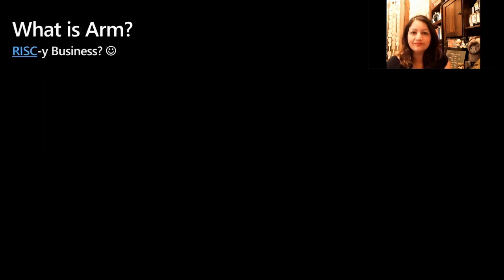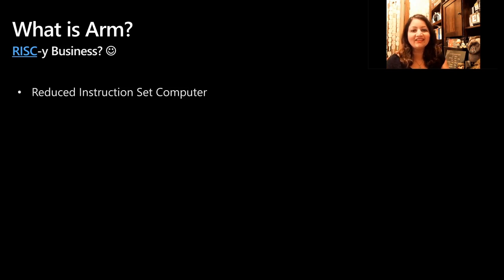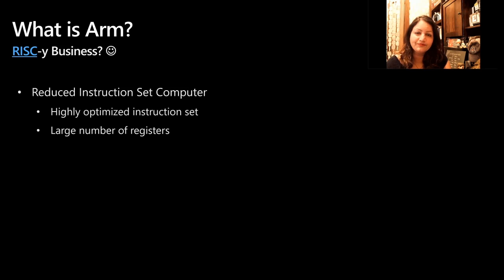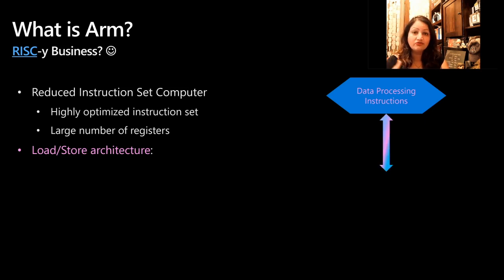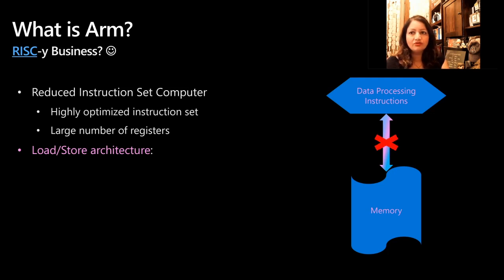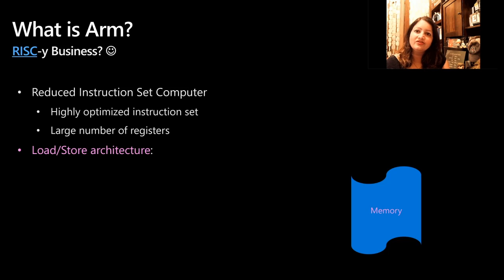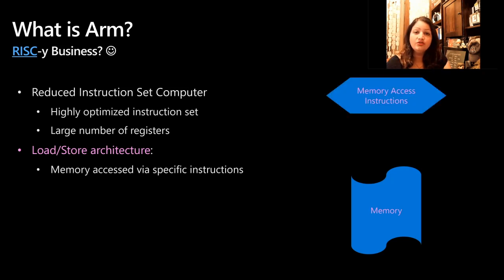Now let's talk about ARM. ARM is what we know as RISC architecture, which is short for Reduced Instruction Set Computer. RISC provides a highly optimized instruction set and also has a large number of registers. One important thing to know about ARM is the load-store architecture. For commodity hardware, you may be familiar with x86-64. When trying to access memory in an x86-64 architecture, data processing instructions can directly access memory. But with load-store architectures, you have to access memory via specific memory access instructions. You load your data into processor registers and then store it into memory.